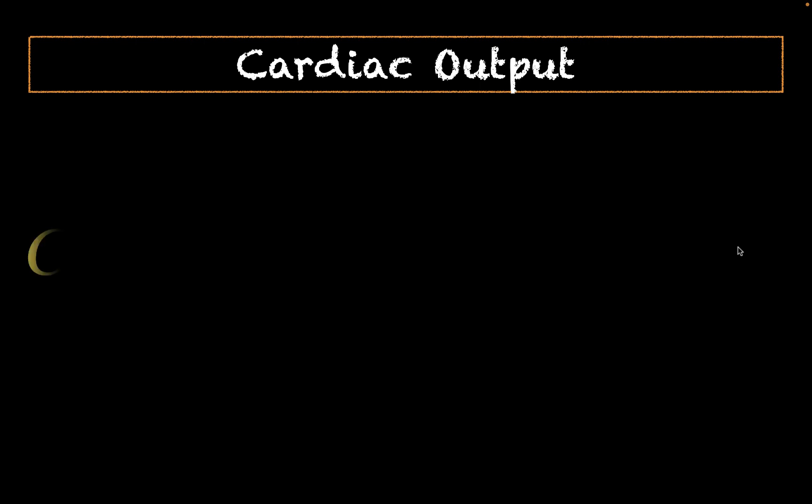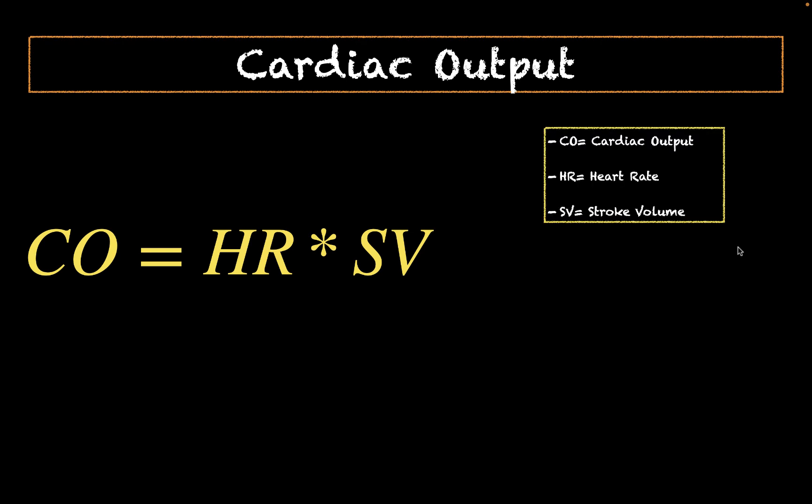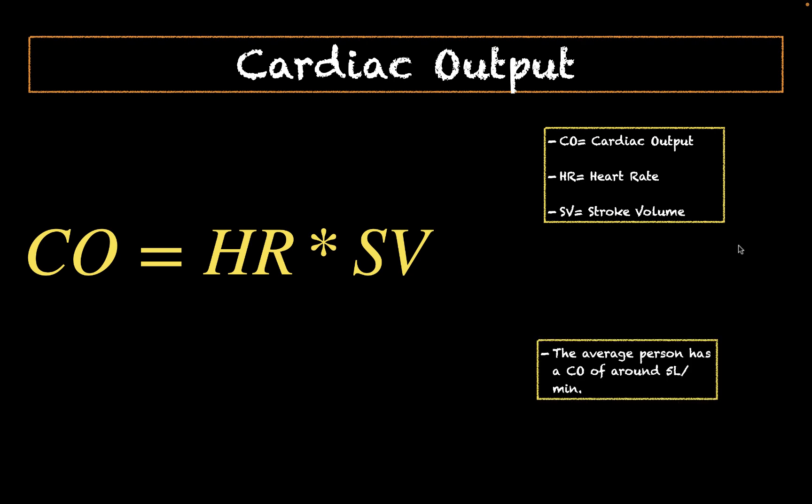The last topic is cardiac output, which is calculated by multiplying heart rate and stroke volume. Cardiac output describes how much fluid the heart pumps out per unit time. For the average human, cardiac output is around 5 liters per minute.